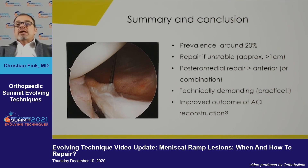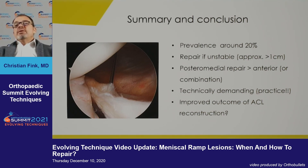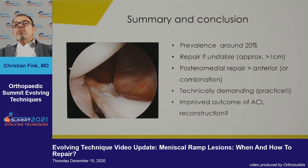In summary, ramp lesions are really important and relatively new to knee surgeons. We must inspect the posterior medial aspect of the knee in cases of ACL instability. Repair is indicated at approximately one centimeter, though there is debate on size threshold. Posterior medial repair has advantages over anterior repair, but sometimes a combination works. This is technically demanding — you really have to practice before attempting it. Whether it leads to improved outcomes of ACL surgery, we will see, but at least biomechanically and theoretically, it does.